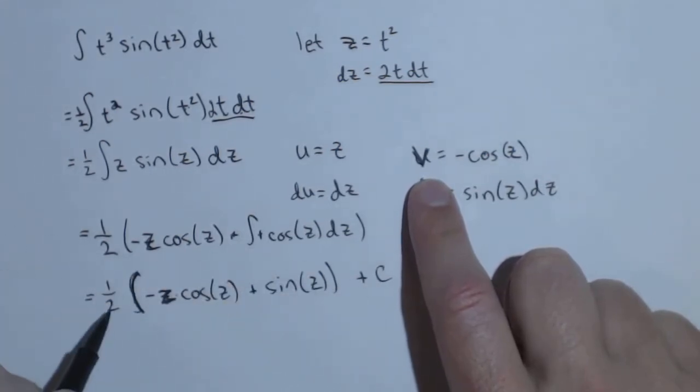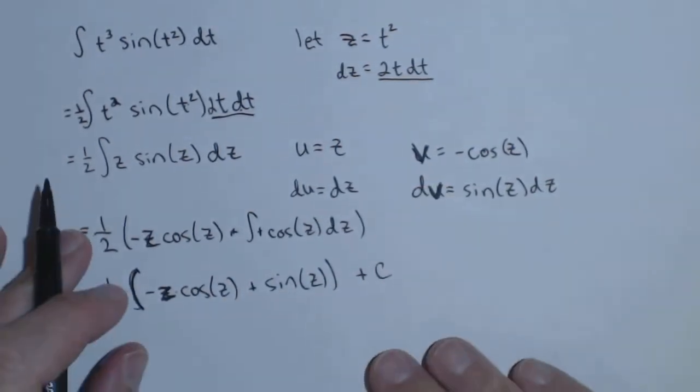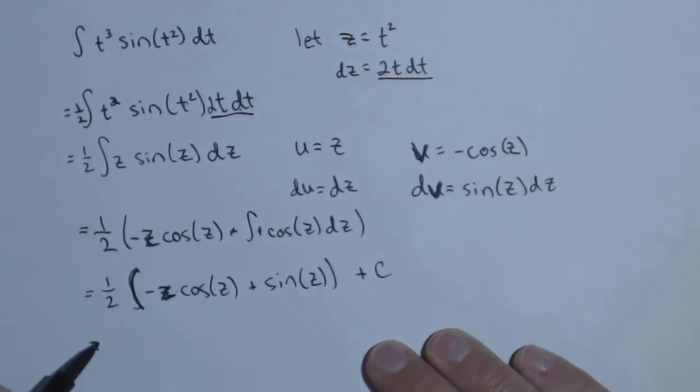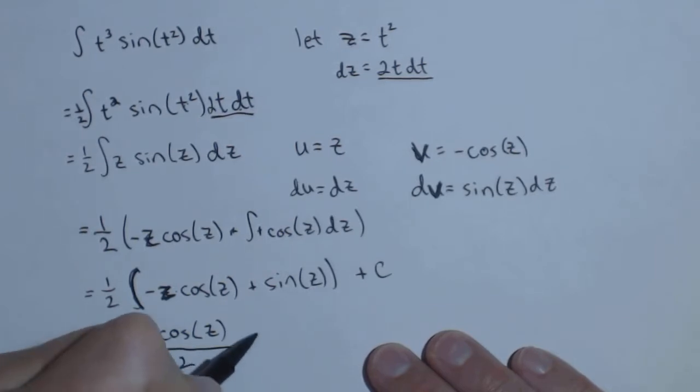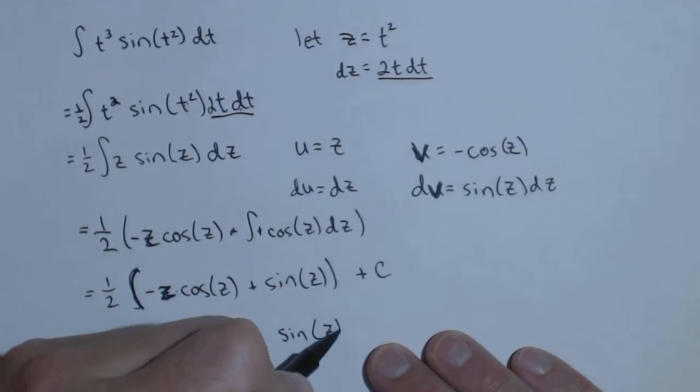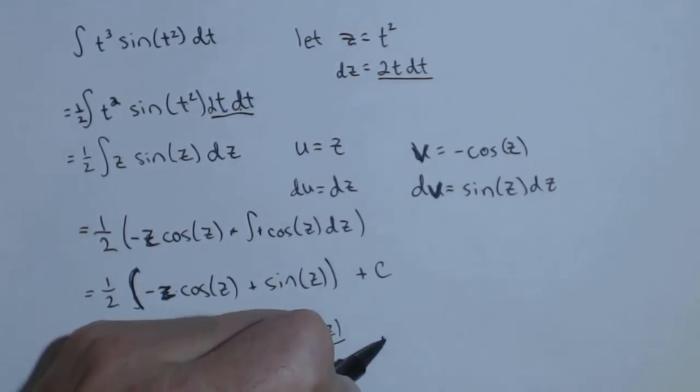I don't need to multiply the plus c by one half, it's just some general constant. So I'm going to multiply the one half through, so I have negative z cosine of z over two, plus sine of z over two, plus c.